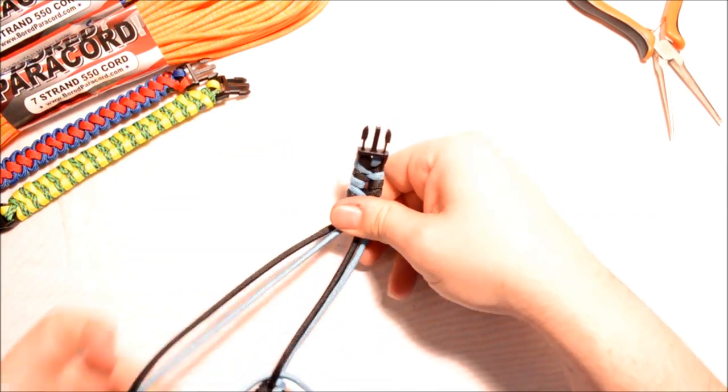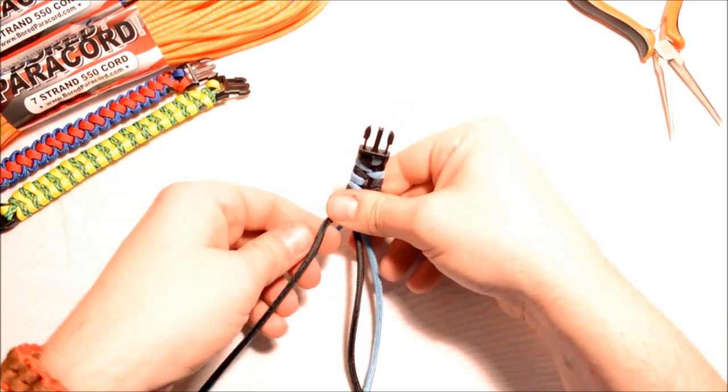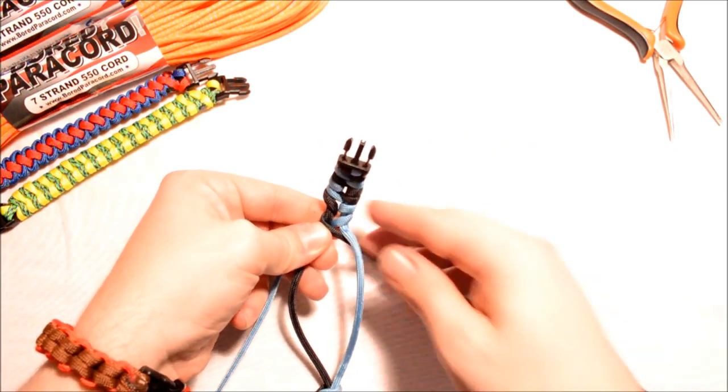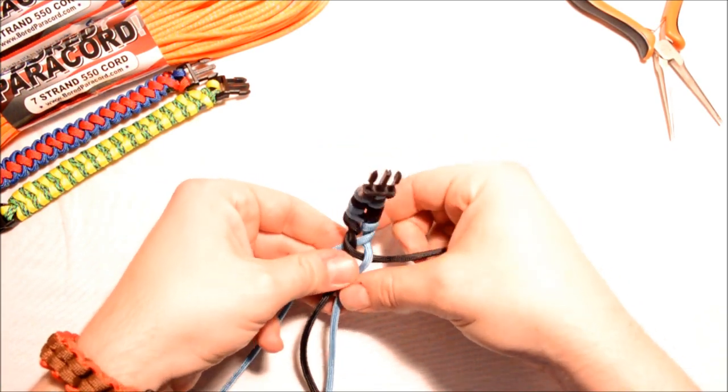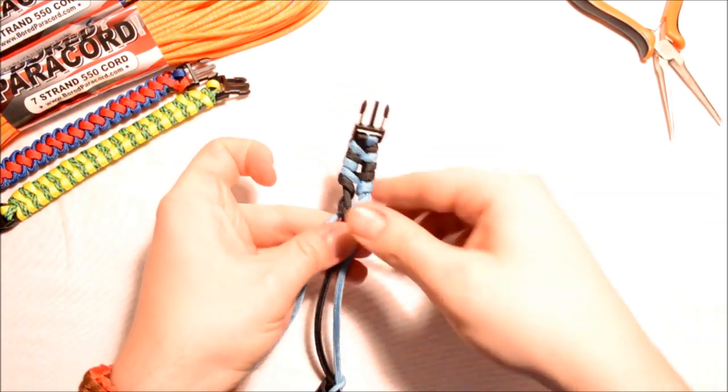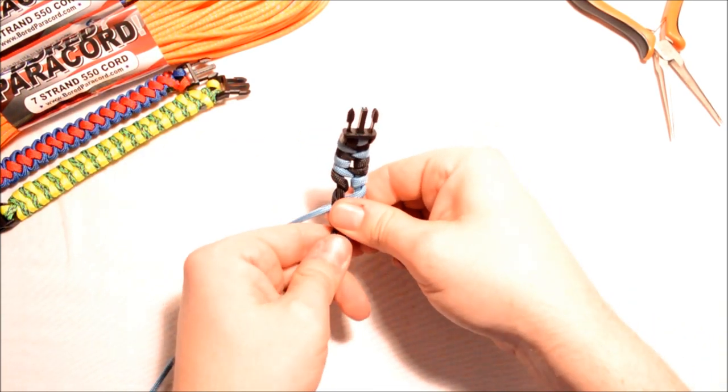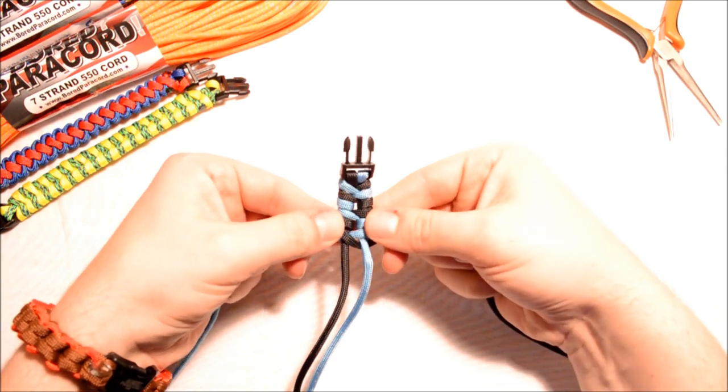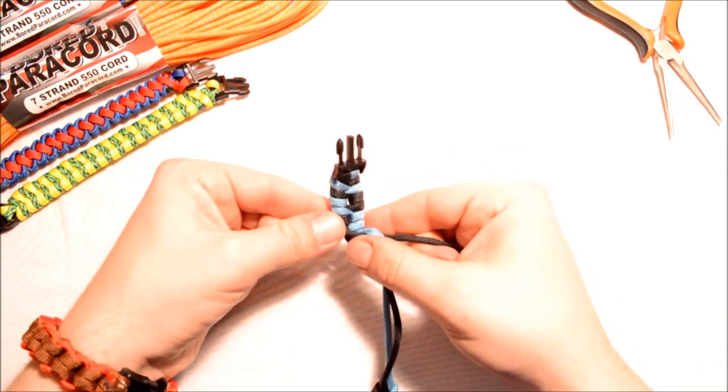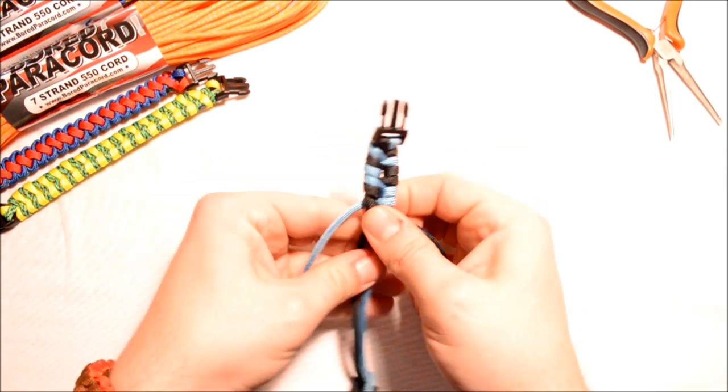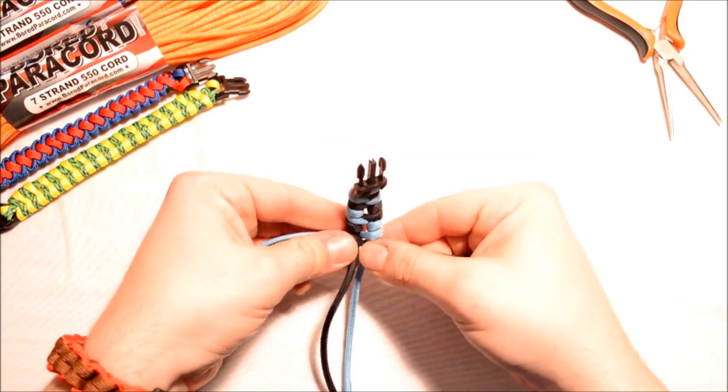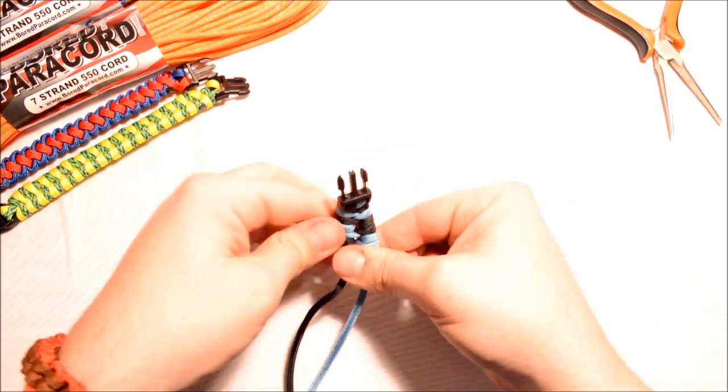So over, under, and through. Left side, over, under, and through. Hold on to your middle two pieces, your middle two cords right here. Push up, kind of roll these towards the center, pull it tight. That's going to keep everything nice and locked in there.